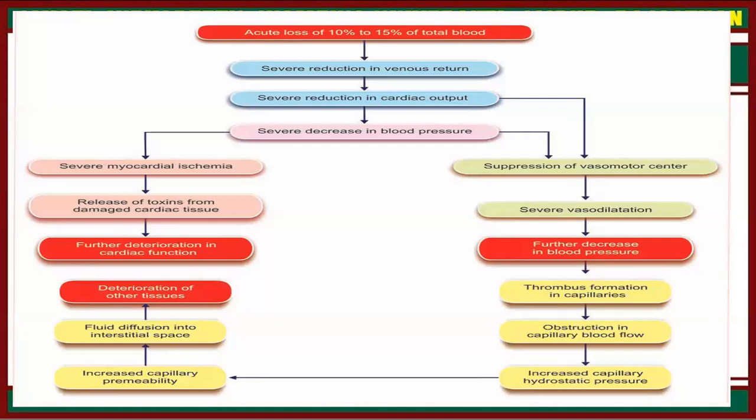In this diagram we can see acute loss of 10% to 15% of blood. First, it leads to severe reduction in venous return, then severe reduction in cardiac output, and severe decrease in blood pressure. This causes severe myocardial ischemia, release of toxins from damaged cardiac tissue, and further deterioration in cardiac functions. Severe decrease in blood pressure also leads to suppression of the vasomotor center, causing severe vasodilation and further decrease in blood pressure. Thrombosis formation in capillaries causes obstruction in capillary blood flow, increased capillary hydrostatic pressure, increased capillary permeability, and fluid diffusion into interstitial fluid, leading to deterioration of other tissues.